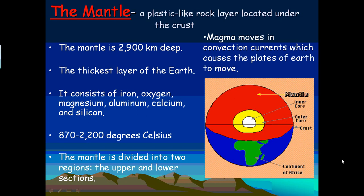The mantle is divided into two regions: the upper mantle and the lower mantle. Inside the mantle, magma moves in convection currents, which causes the plates of the Earth to move. This is what causes earthquakes and mountain formation.